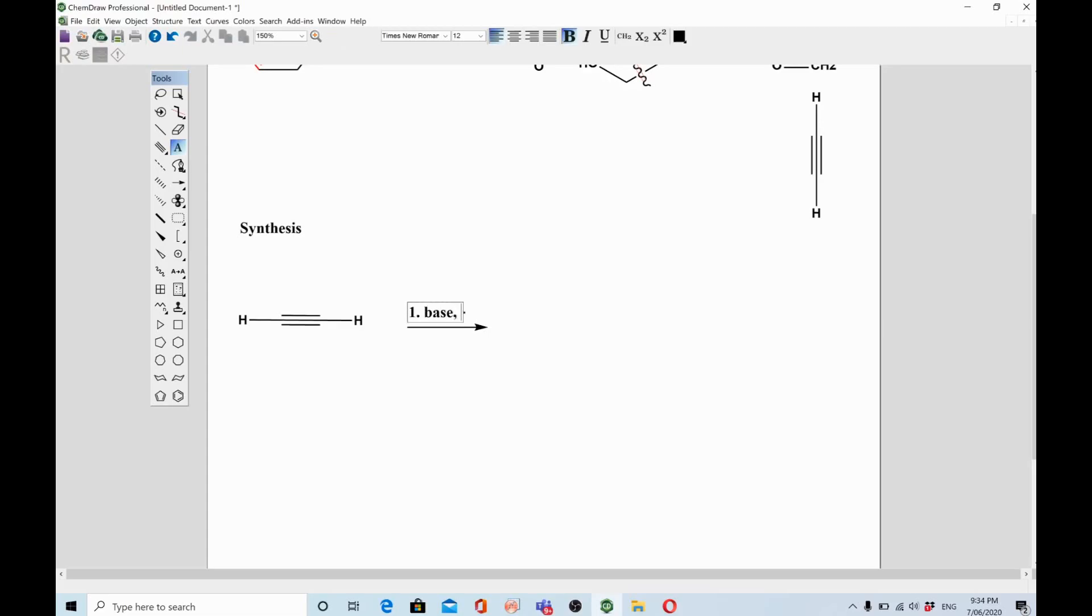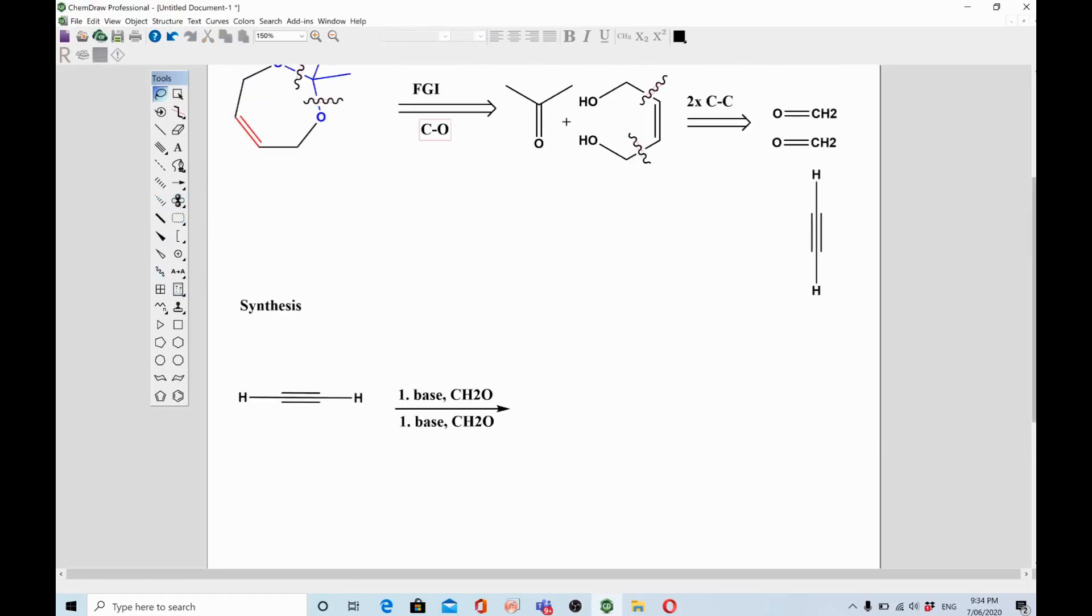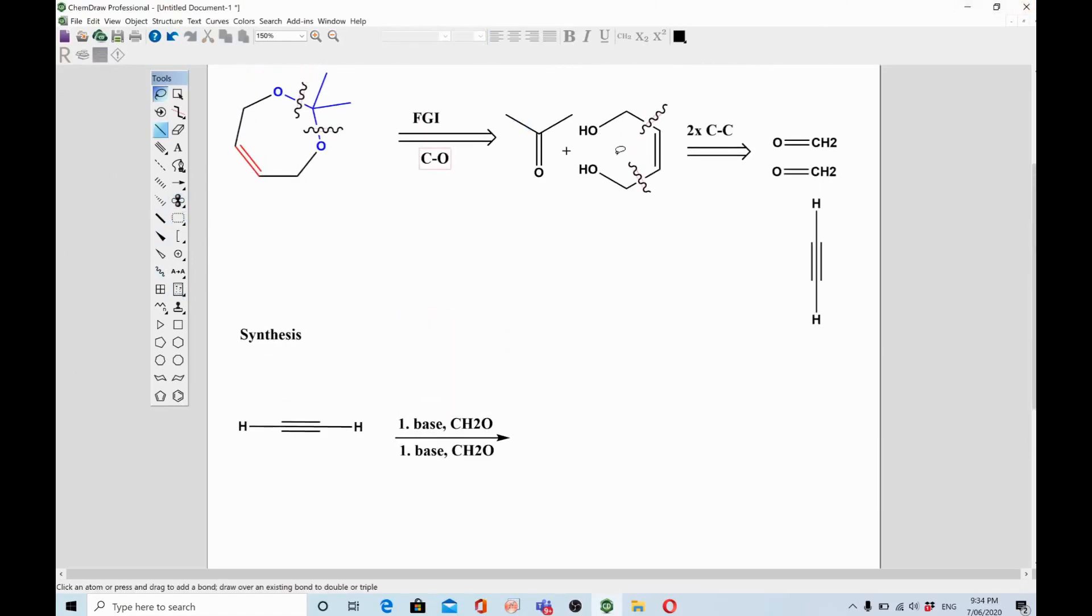So you use base to deprotonate one of the hydrogens and then you react formaldehyde, that is CH2O. You use any base to deprotonate it based on your availability in the lab when you are practically doing it, but when you are theoretically doing it you can put any base - sodium amide, LDA, or sodium hydride, these are the number of bases you can put here. This is the forward direction we are going now. They will not give you this molecule but there is a trick in this one.